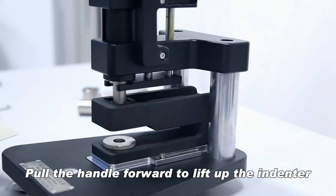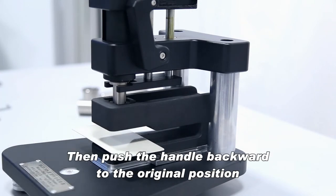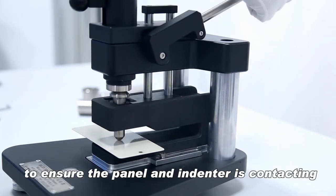Pull the handle forward to lift up the indenter and put the panel on the panel support. Then push the handle backward to the original position to ensure the panel and indenter are contacting.